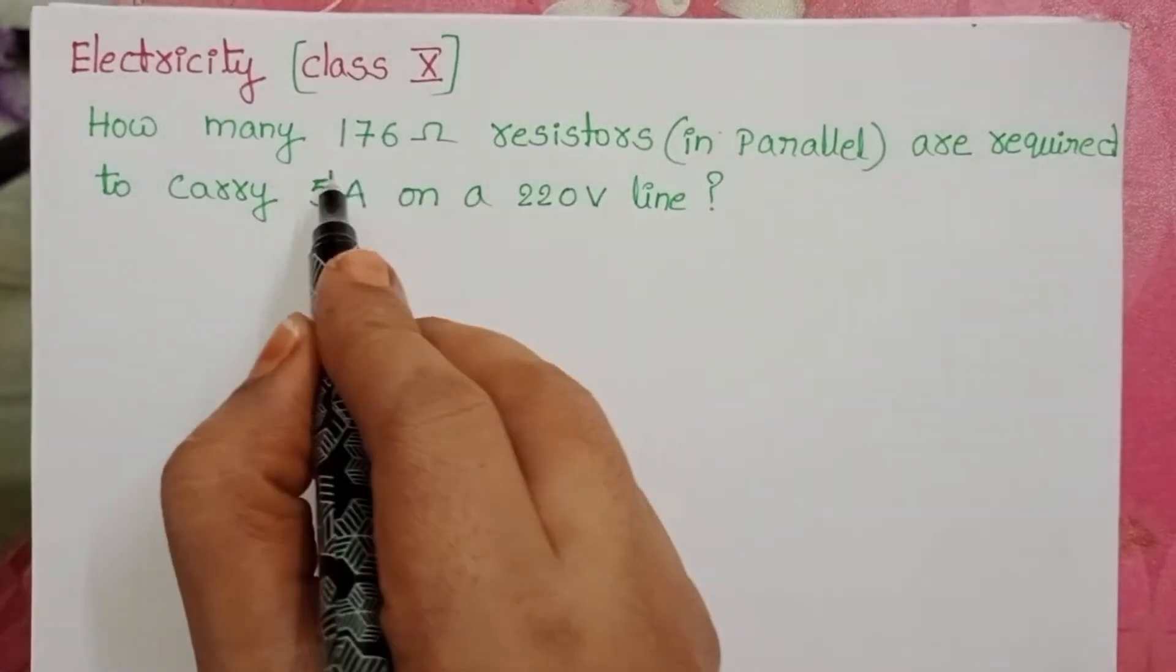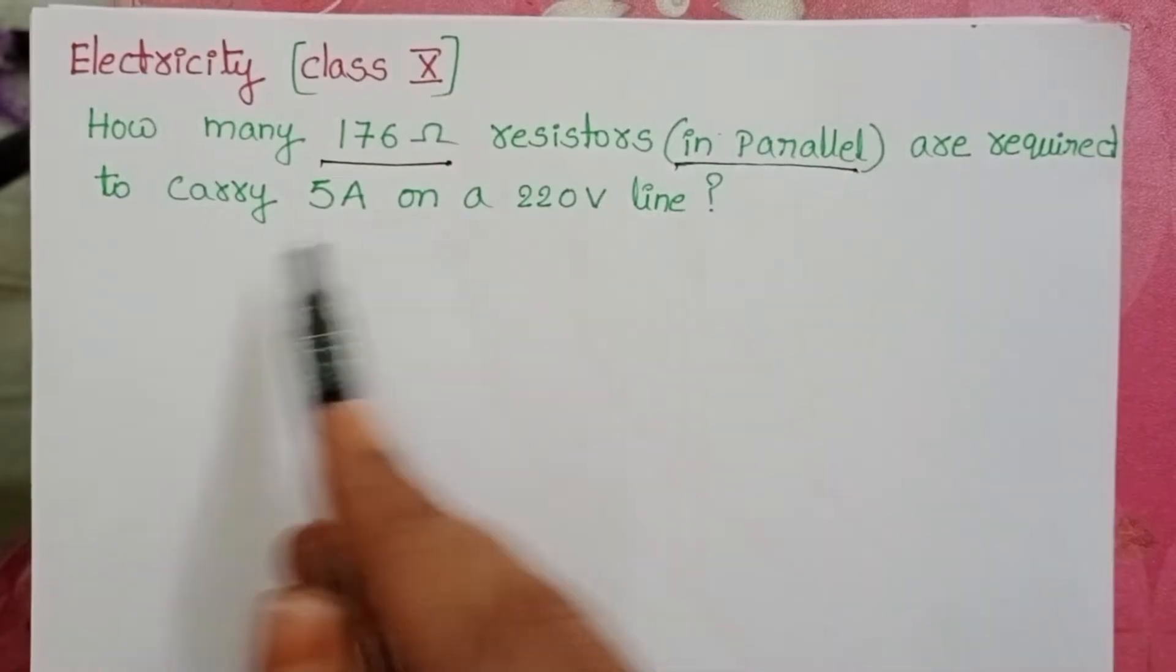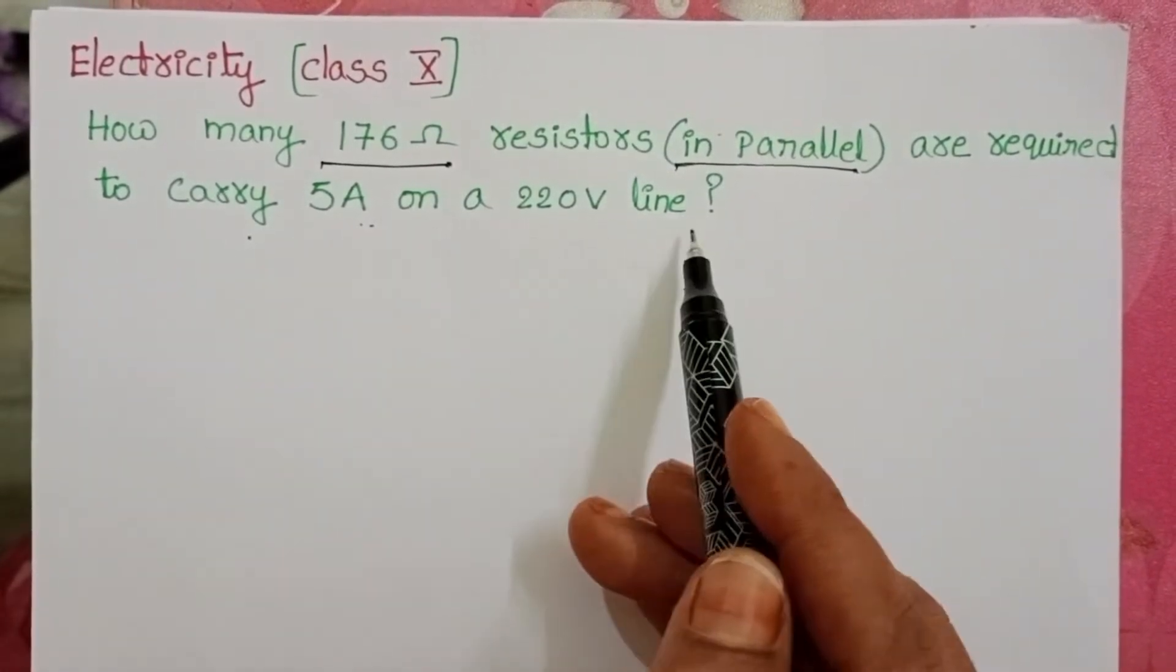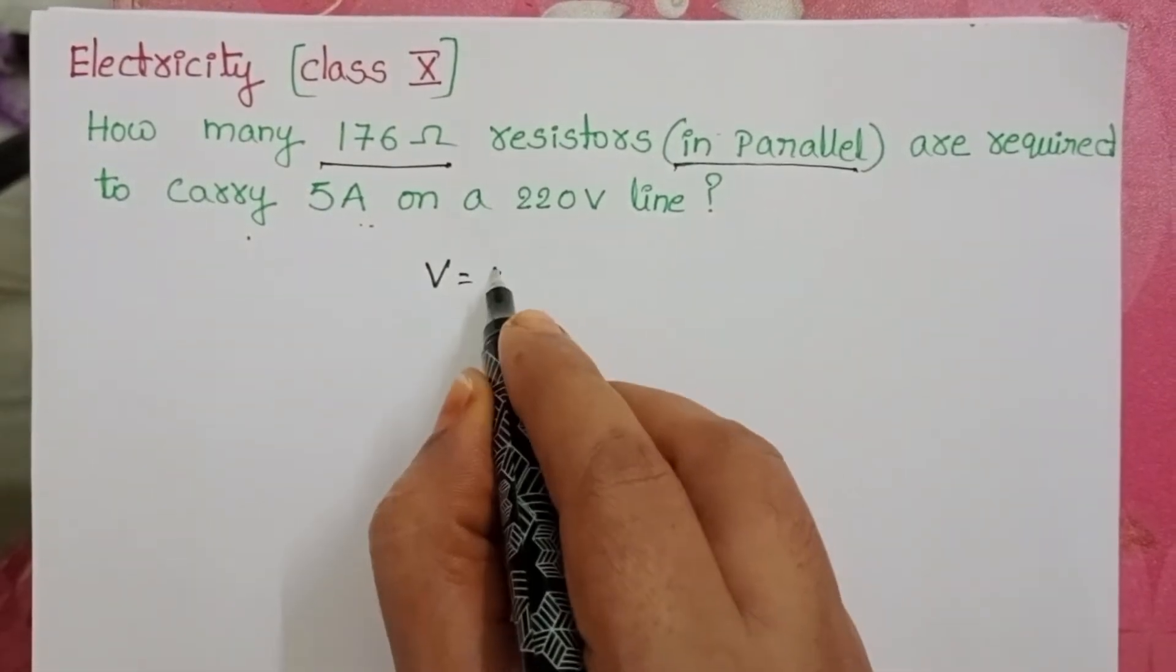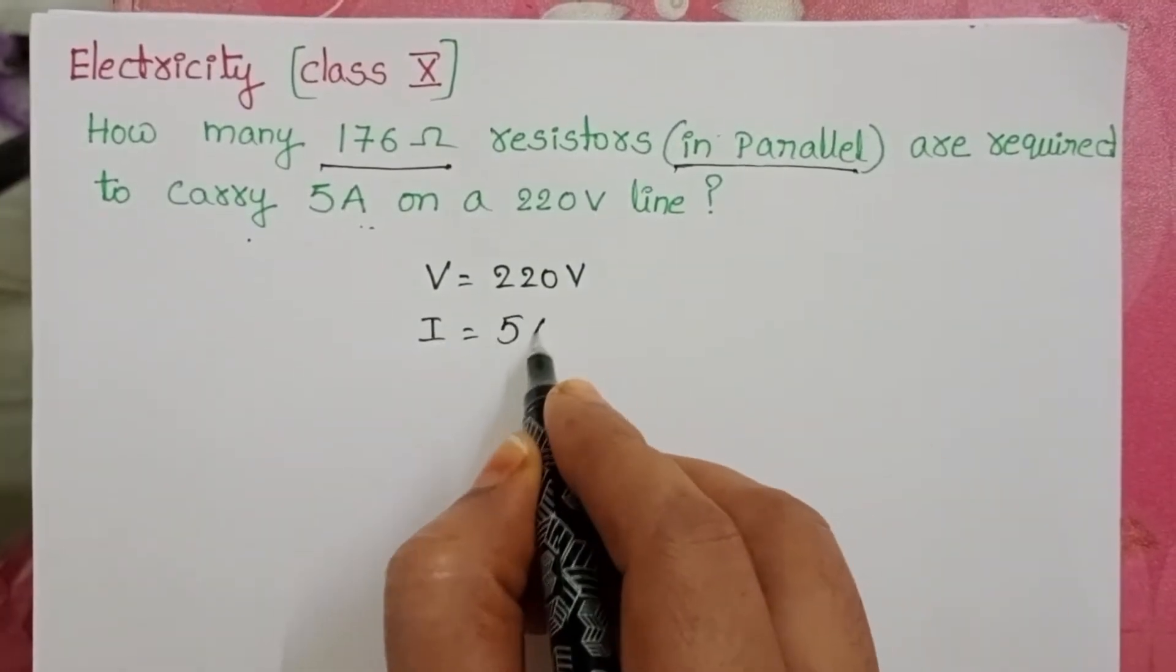How many 176 ohm resistors in parallel are required to carry 5 amperes on a 220 volt line? The given potential difference in the circuit is 220 volts. The current is 5 amperes.